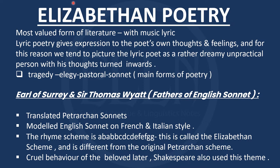The main point is Shakespeare, who has his own style and structure. The Shakespearean rhyme scheme is ABAB CDCD EFEF GG. This is called the Elizabethan scheme. It is different from the original Petrarchan scheme because in this era they changed it.